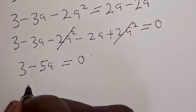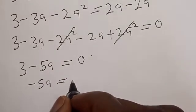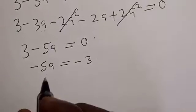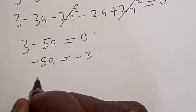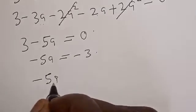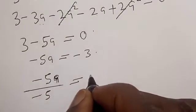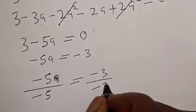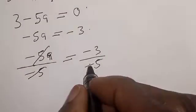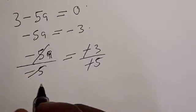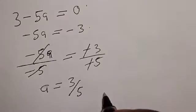Then we have minus 5a squared. Moving the plus 3 across the equals sign it becomes minus 3. Now let's divide both sides. We divide by minus 5, so minus 5a squared divided by minus 5a squared cancels, minus cancels minus and it becomes positive. Then a is equal to 3 divided by 5.